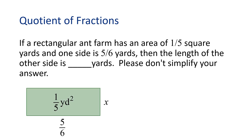Let's start by drawing a picture of this scenario. We have a rectangle with an area of one-fifth square yards. One side has a measure of five-sixths yards, and the other is marked x — that's the side we want to find. We know the area of a rectangle is equal to length times width, so we can write an equation like this: one-fifth equals five-sixths times x. To solve for x, we would need to divide both sides by five-sixths. But remember, instead of dividing by a fraction, we can multiply by its reciprocal.